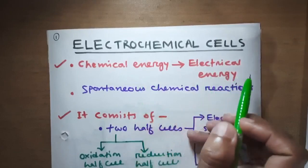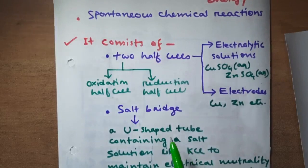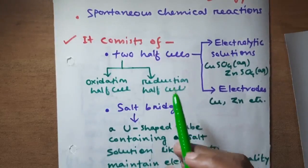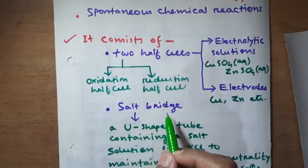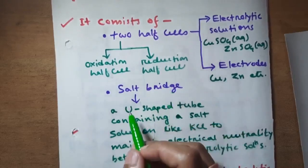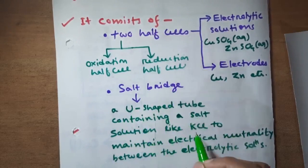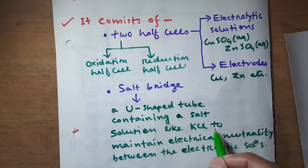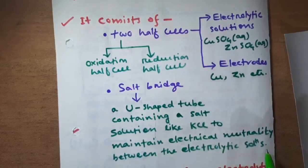After the half cells, the next important part of an electrochemical cell is the salt bridge. This salt bridge is a U-shaped tube containing a salt solution like KCl — potassium chloride — to maintain electrical neutrality between the electrolytic solutions.